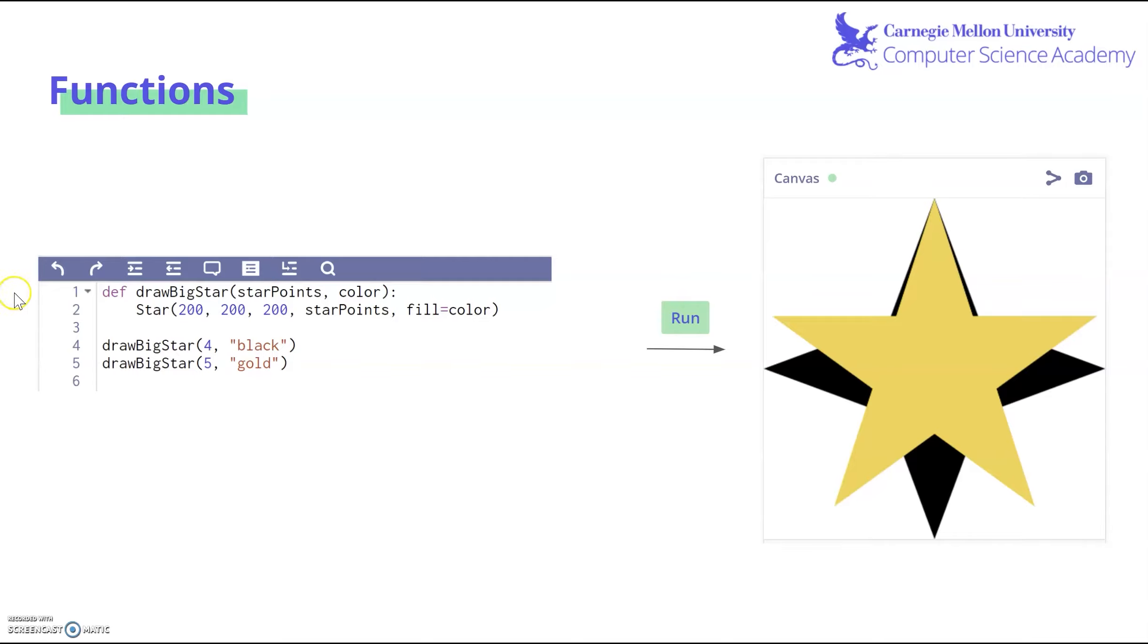Let's take a look at this sample function to get a better idea of how functions work. First things first, we have to define it. So on line one, here we def drawBigStar with inputted values of starPoints and color. So as you can see here, we have camel case with the first word being lowercase and a pretty good name for what's about to be done in the function, which is draw big star. Then you get into the body of the function in which we draw star at center 200, 200 with a radius 200 with the inputted number of points and the inputted color.